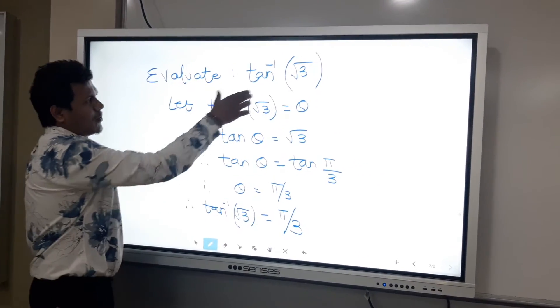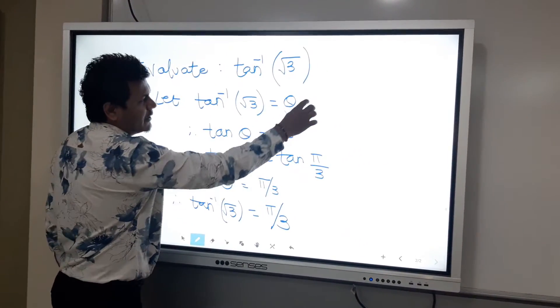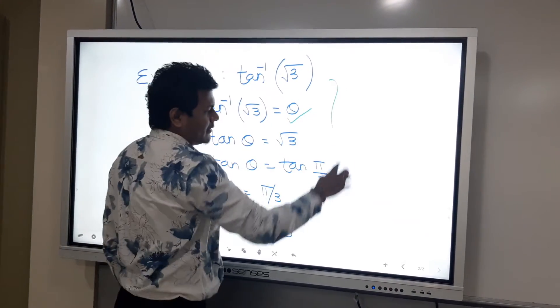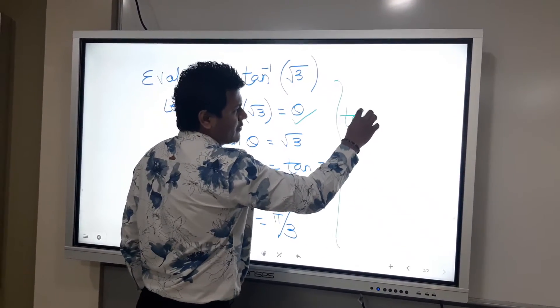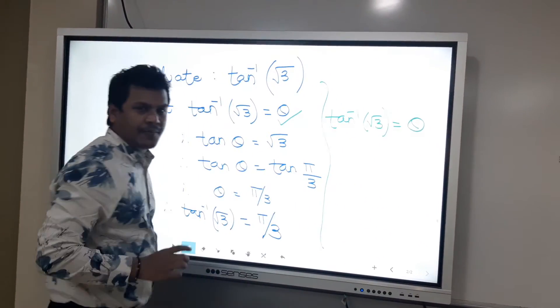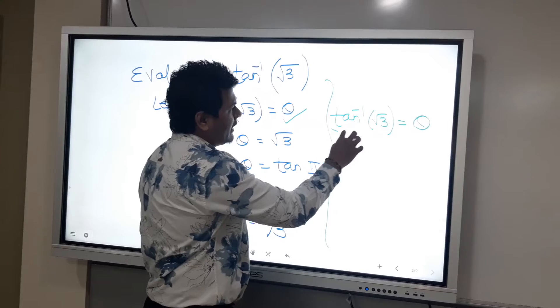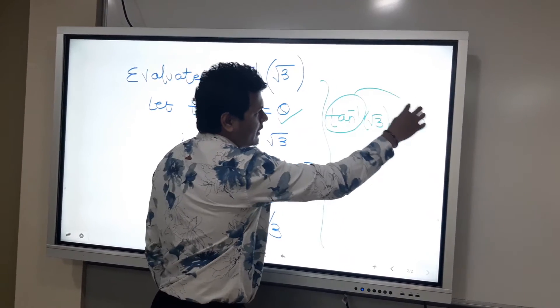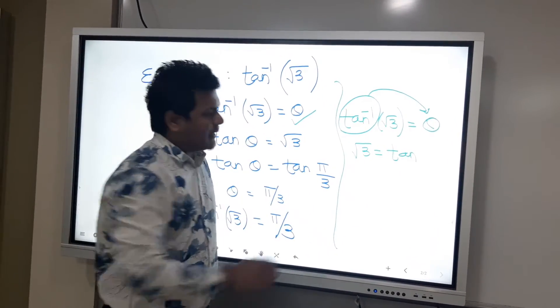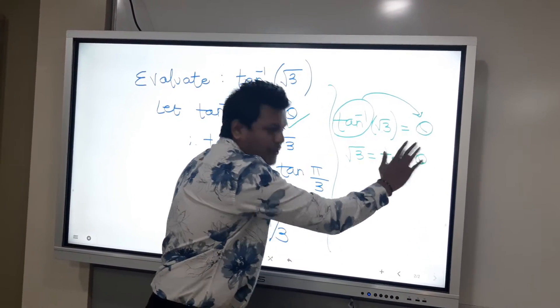Let the question equal theta. So tan inverse root 3 equals theta. If I shift tan inverse to the other side, it becomes only tan, and theta will remain as it is.